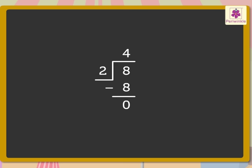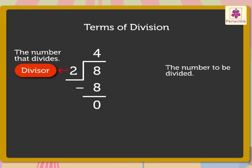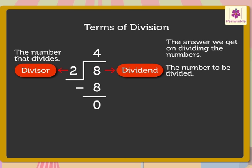Let us learn the terms of division. A number that divides another number is called the divisor. Here, number 2 is the divisor. The number to be divided is called the dividend. Here, number 8 is the dividend. The answer that we get on dividing the numbers is called the quotient. Here, number 4 is the quotient.